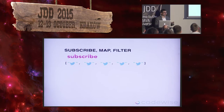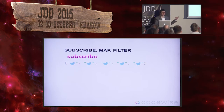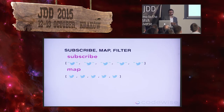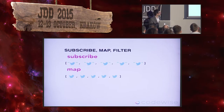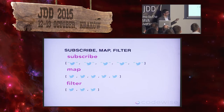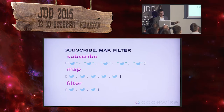Then we can apply several transformations. The simplest one we saw in the previous example was map — we take an element, do some processing on it, and return something else. Usually we take a string and return an object that represents the data, changing the type of the stream. We mapped it from one type to another.